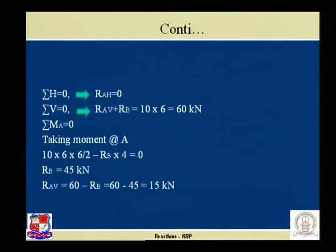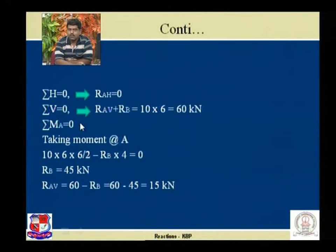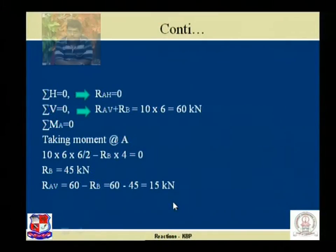RAV is equal to 60 minus RB, that is 60 minus 45, that is 15 kilo newton. Using three equilibrium conditions — sigma H, sigma V, and sigma M_A equal to zero — we were able to find out the unknown reactions RAH, RB, and RAV. Hence this is a statically determinate beam and our problem is solved. Let us solve the next numerical, problem number two.